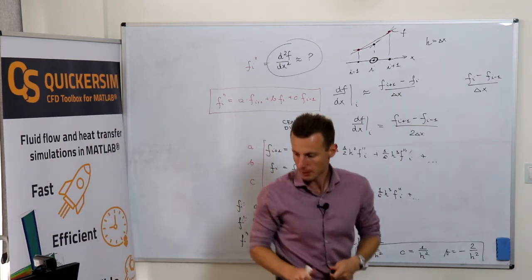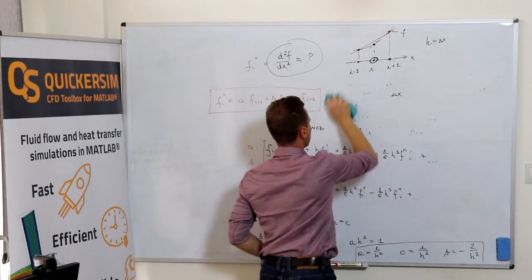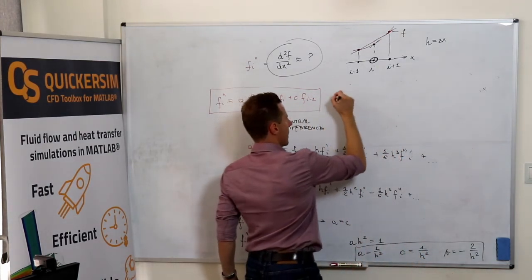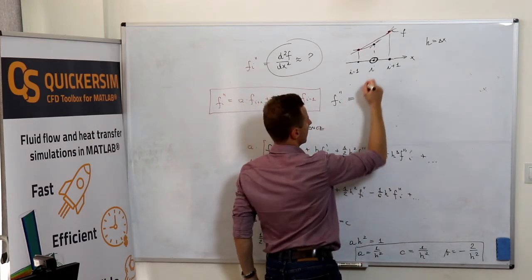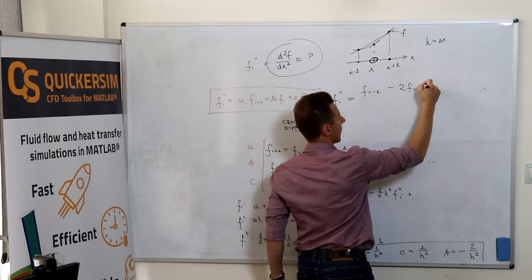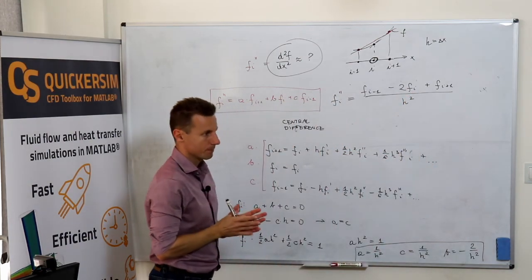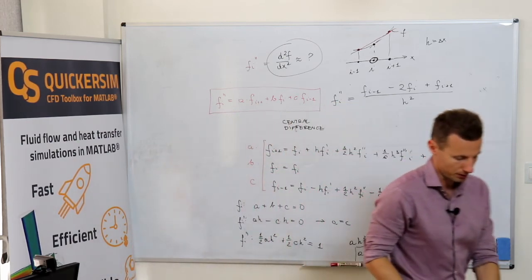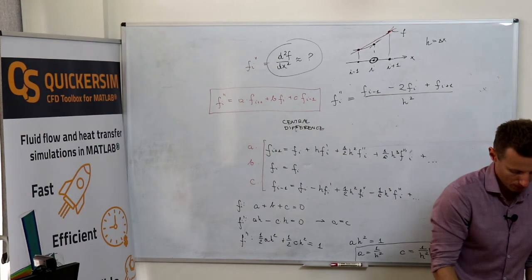So the final formula is: the second derivative of function f at node i can be approximated as f_{i-1} minus 2 f_i plus f_{i+1} divided by h squared. Familiar with that? Probably a summary for most of you, but I wanted to reintroduce this concept of the consistent procedure once again, because this will be an important step when we move to finite difference methods.